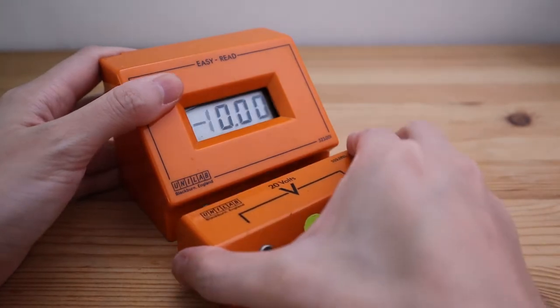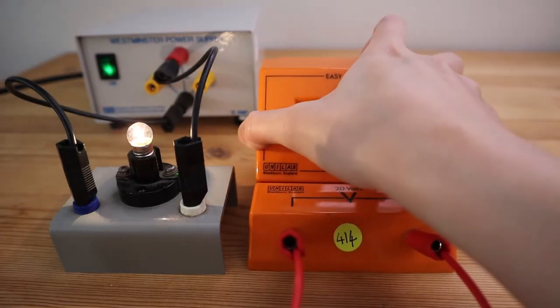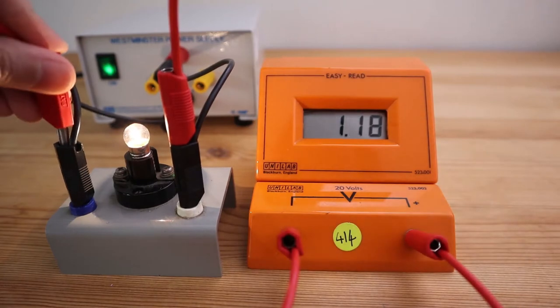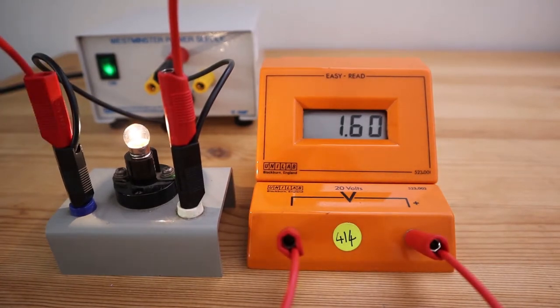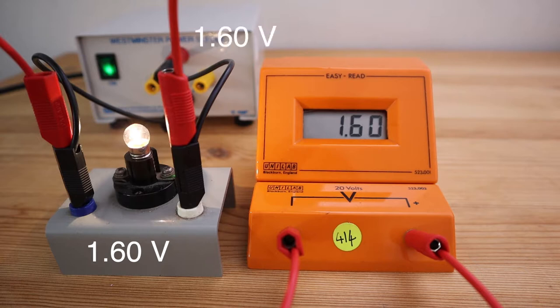Let's see if we can explain this by looking at the voltage across the components. In the circuit with just one single bulb, the voltage across the bulb is 1.6 volts. This is also the total voltage given by the power supply.